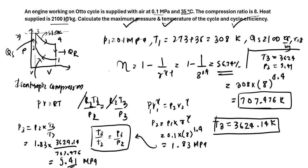This is how you calculate efficiency, maximum pressure, and maximum temperature for an Otto cycle. Thank you.